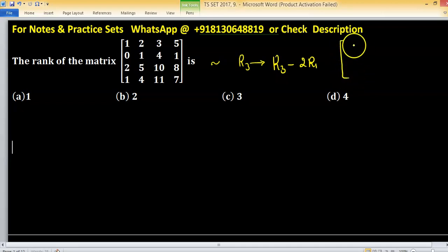So what we will get, there is no change in first row, so 1, 2, 3, 5. Second row also remains same, 1, 4, 1. Third row will be 0, 1, 4, and minus 2.